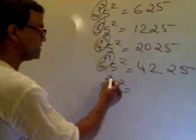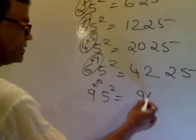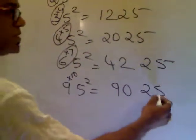After 9 comes 10. 9 times 10 is 90. 5 square is 25.